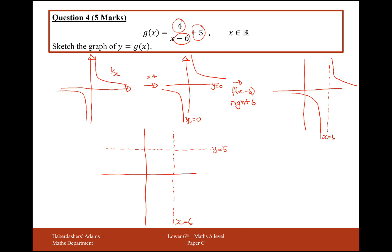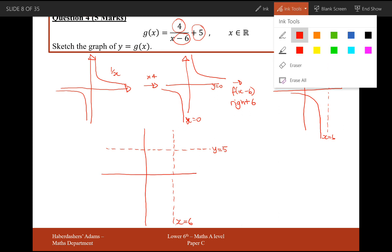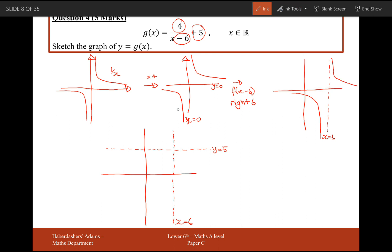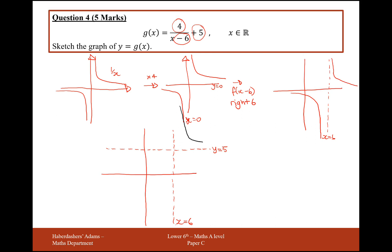So the graph is going to look like, I'll draw it in black so we can clearly see it. It's going to be up here, looking like that, and down there. So it's going to be a roughly 1 over x graph, move right by 6, up by 5, and stretch by scale factor 4.